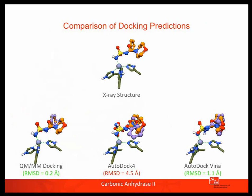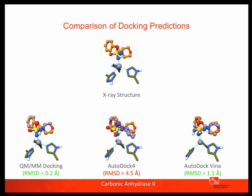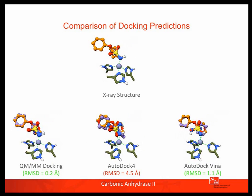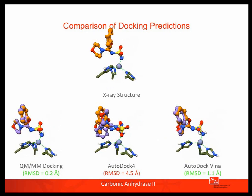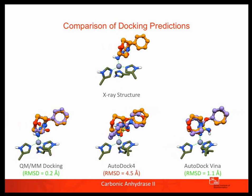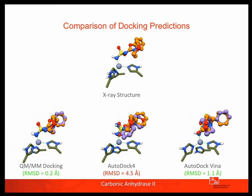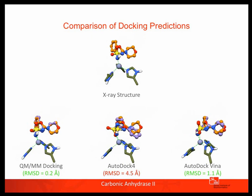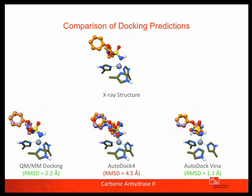Here is one example from the benchmark set. The X-ray structure is shown in orange — the correct solution. The QM/MM docking approach gives a nearly perfect overlap with the X-ray structure, a very small RMSD. AutoDock-4 and AutoDock-Vina are classical docking codes that are freely available. AutoDock-4 gets the ligand conformation completely wrong — the two rings are exchanged, the whole ligand is flipped, and the RMSD is very large. AutoDock-Vina gives a result that is technically a success based on RMSD, but if you look at the details of the zinc-binding functionality, the ligand actually binds from the wrong atom — which is of course very important.